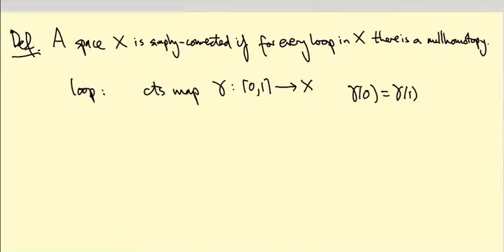So if X is a matrix group, this just means that gamma is a one-parameter family of matrices whose entries depend continuously on t, some parameter t. And what is a null homotopy?